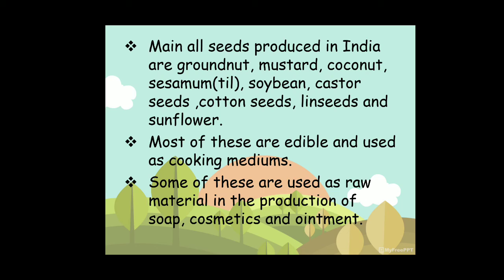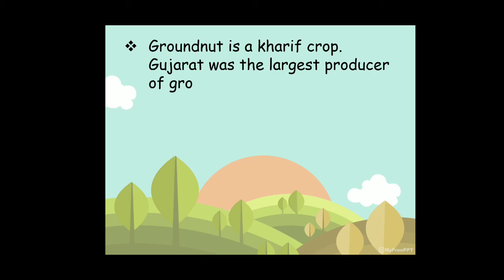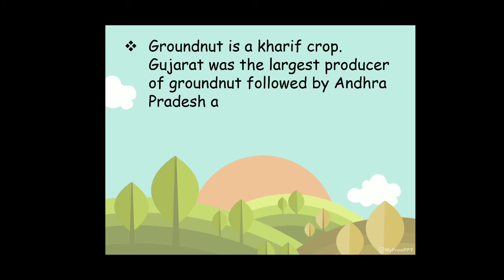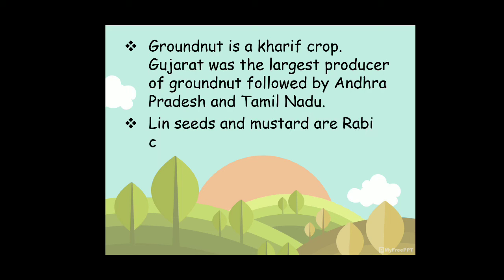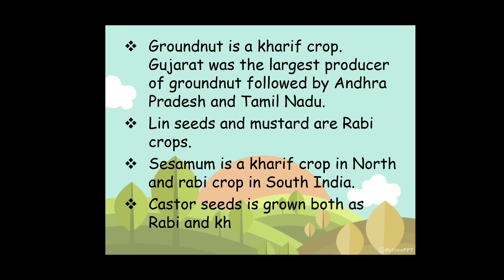These two features — used as edible cooking medium and as raw material for soap, cosmetics, and ointments — are important for one mark questions. Groundnut is a Kharif crop. Gujarat was the largest producer of groundnut, followed by Andhra Pradesh and Tamil Nadu. Linseed and mustard are Rabi crops. Sesamum is a Kharif crop in North India and a Rabi crop in South India. Castor seeds are grown both as Rabi and Kharif crops.